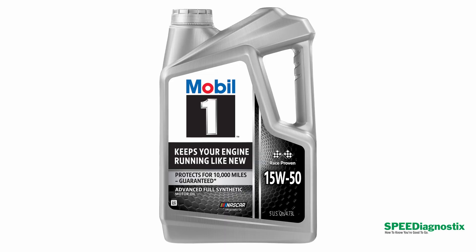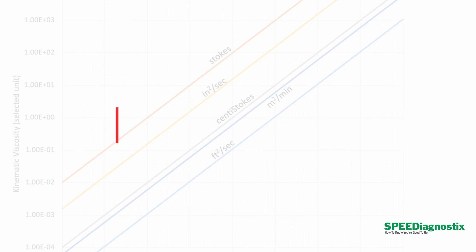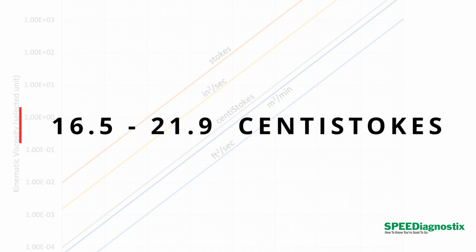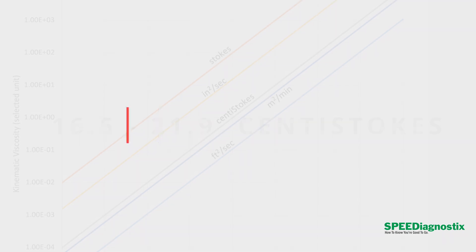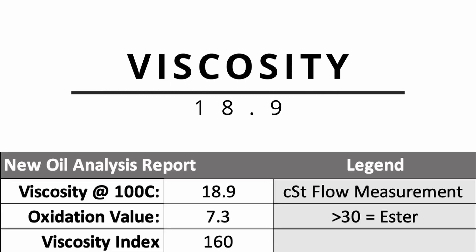Today's oil is going to be Mobil 1 15W-50. Now that's a 50-grade oil, which means it's going to be between 16.5 and 21.9 centistokes — that's the measured flow rate. When you're looking at the new oil sample, you want to look at viscosity first; it's the most important characteristic of any oil. In this case it's 18.9, right in the middle of that 50-grade range — about what you would expect.